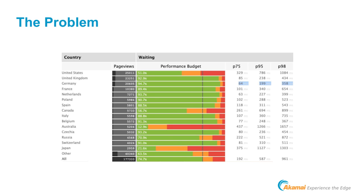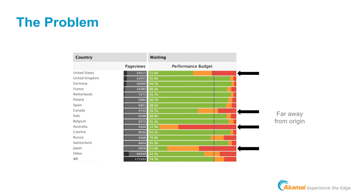Let's zoom in on the actual problem. You see the waiting time — the server thinking time — for my product detail pages, which is what people come to my website for. Currently I can't cache it: too much long-tail content, too many changes. Looking closely: Germany is green, UK not far from Germany — all green. Countries close to my origin are quite fast. However, further away you see problems — Australia a real problem, Japan also.